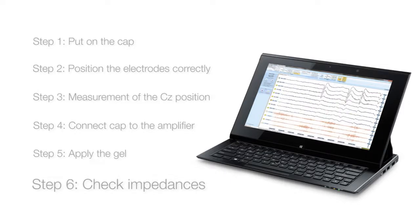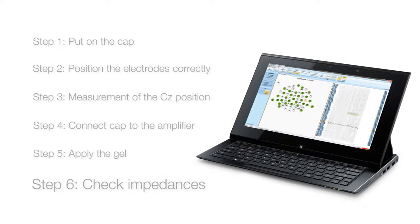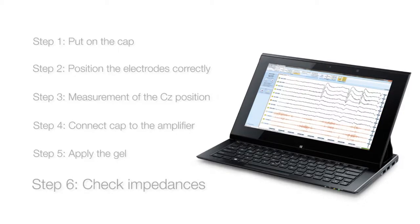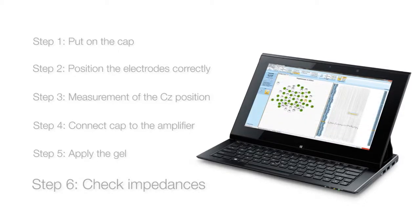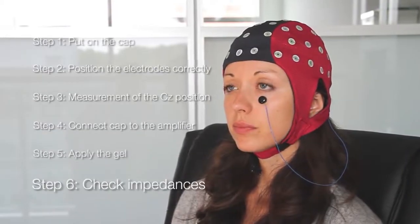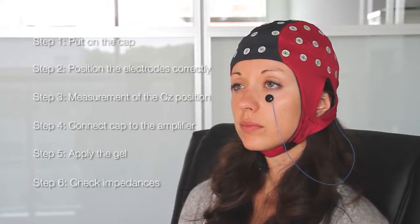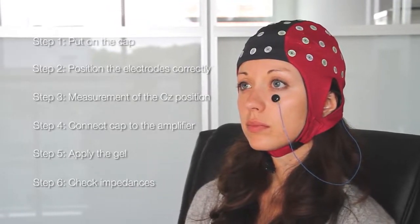It may be helpful to switch between the impedance check mode of your EEG system and the signal display mode while confirming that the connection is satisfactory. As a simple test of quality, you can ask the patient to open and close their eyes and to move their hand.